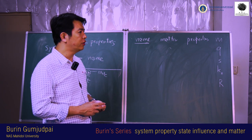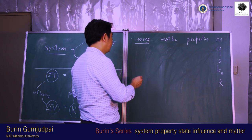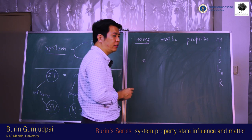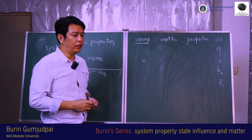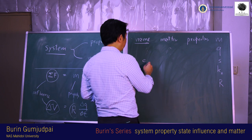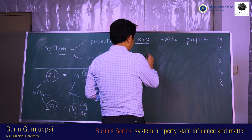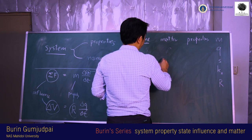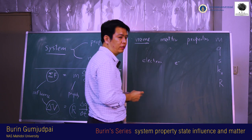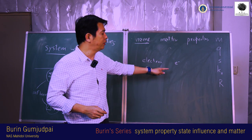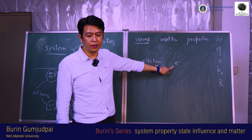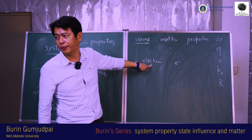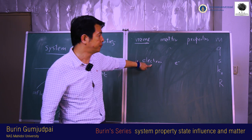So don't be confused when you say 'electron' and you put E here. The word 'electron' is the name of the system. When you put E there, it's the charge — that is a property. So 'electron' is a name, and 'E' is a property.